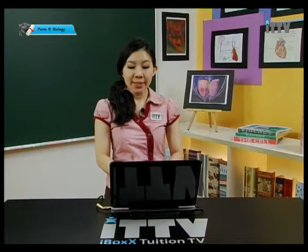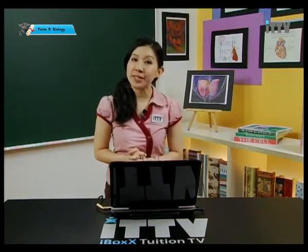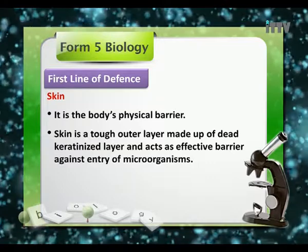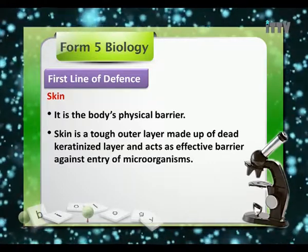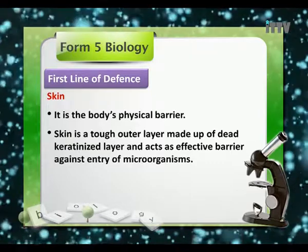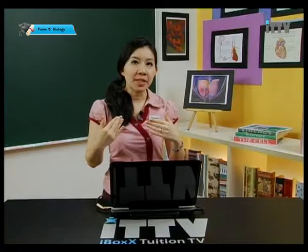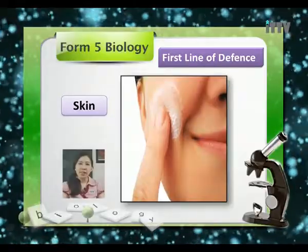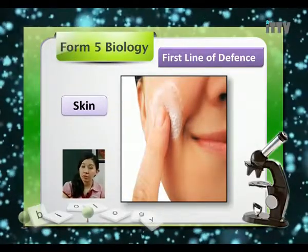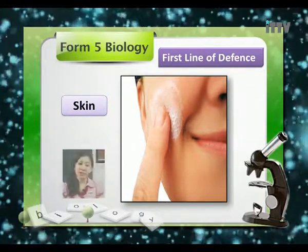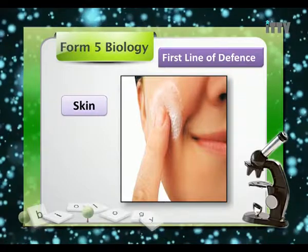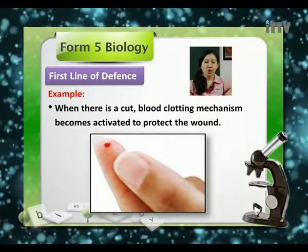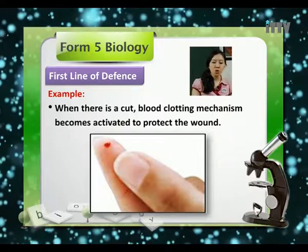Let us look at the first line of defense, which is our skin. The skin is the body's physical barrier — a tough outer layer made up of a deep keratinized layer that acts as an effective barrier against entry of microorganisms. That is obviously our first line of defense because our skin covers us from head to toe, protecting against harmful microorganisms like bacteria, viruses, and parasites. When there is a cut, the blood clotting mechanism becomes activated to protect the wound so that there is no entry of microorganisms through the wound.